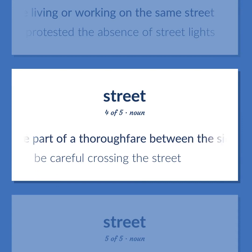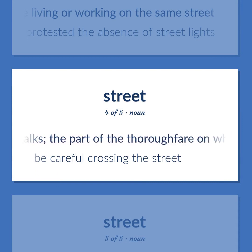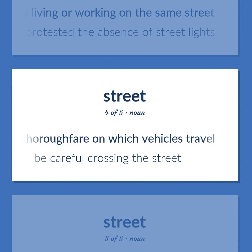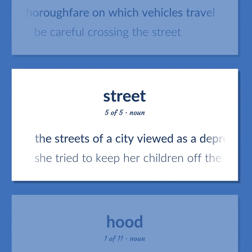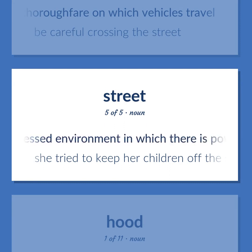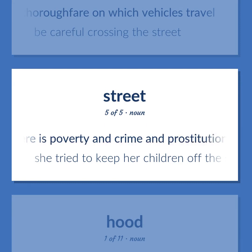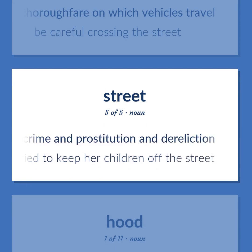Street: the part of a thoroughfare between the sidewalks; the part of the thoroughfare on which vehicles travel — be careful crossing the street. The streets of a city viewed as a depressed environment in which there is poverty, crime, prostitution, and dereliction — she tried to keep her children off the street.